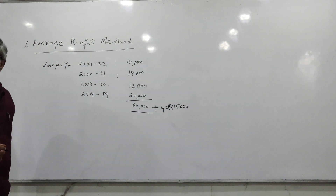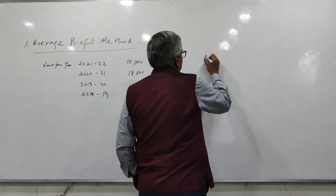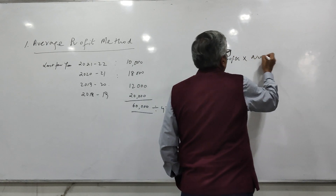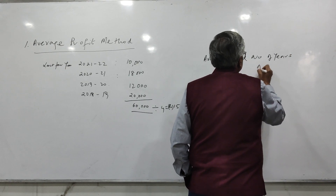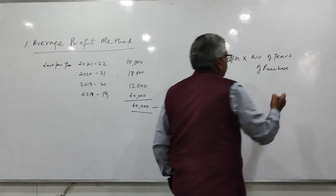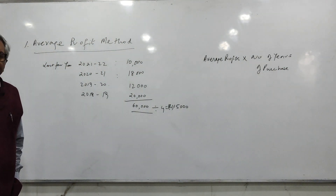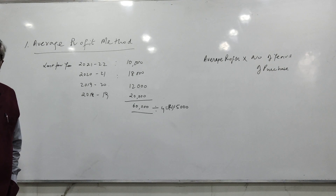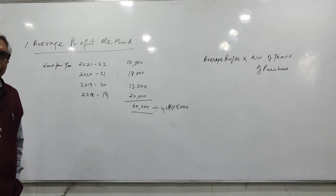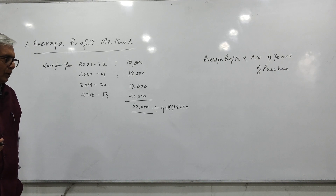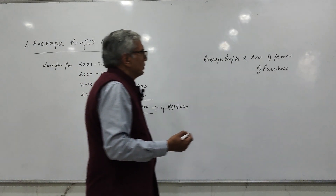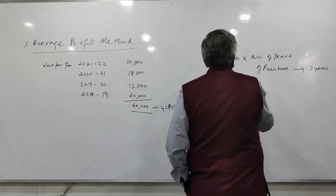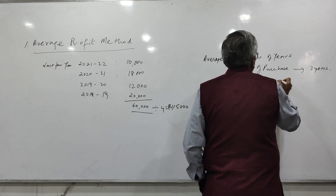We multiply this 15,000 by the number of years of purchase — that is, average profits multiplied by number of years of purchase. The number of years of purchase refers to how many years a partner expects to receive these profits, since you cannot have profits for an indefinite period. Suppose the number of years of purchase is 3 years. Then the value of goodwill is 15,000 into 3, that is rupees 45,000.